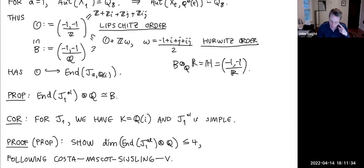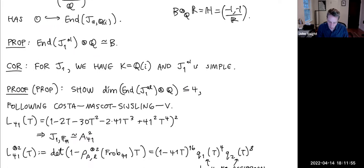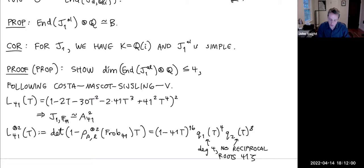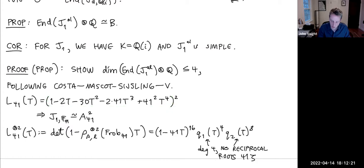How do we prove the proposition? We've shown B ⊂ End(J_1)⊗Q; if we show the dimension is ≤ 4, then by dimension reasons we have equality. To bound the dimension, we use the fact that endomorphisms specialize: reduce mod p. Choosing p = 41 and computing the ℓ-polynomial (the numerator of the zeta function), we get a polynomial that is automatically the square of a degree-4 polynomial, emblematic of QM.